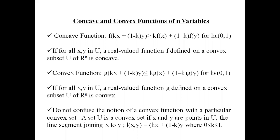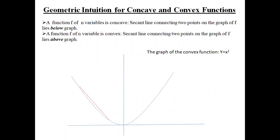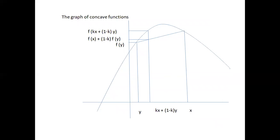Similarly, a function is convex if and only if any line segment connecting two points on its graph lies above its graph. So in the concave case the line segment lies below the graph, and for the convex case the line segment lies above the graph. The graph of the concave function is now on screen — here are two points x and y connected by a line segment below the graph.